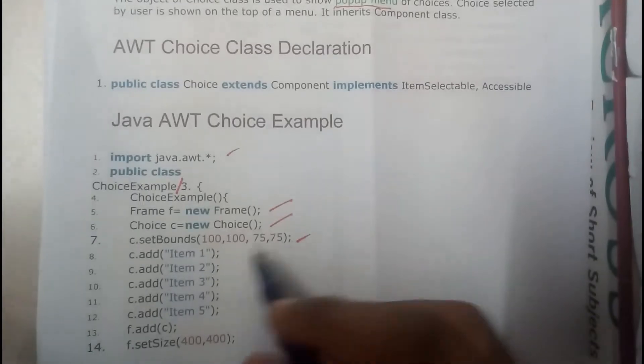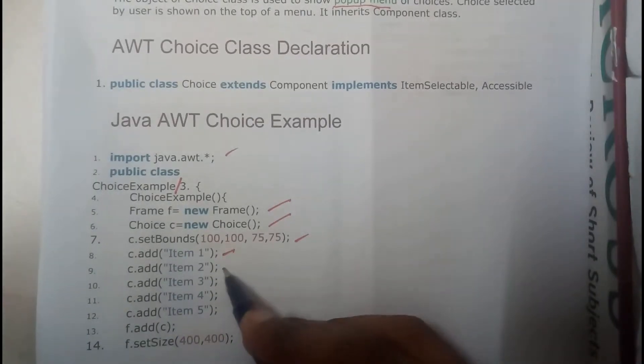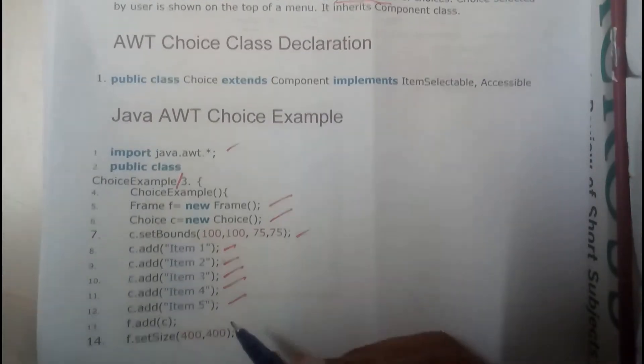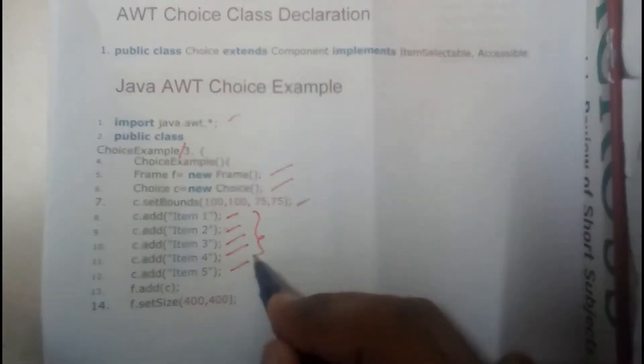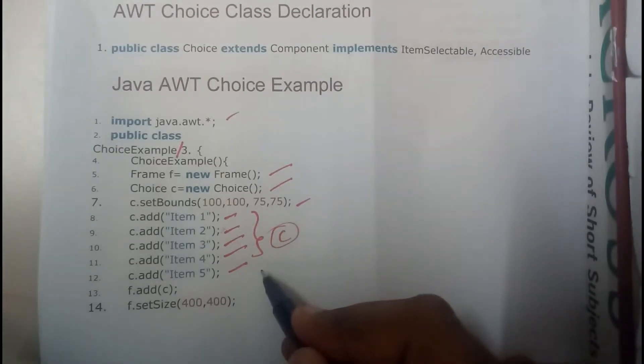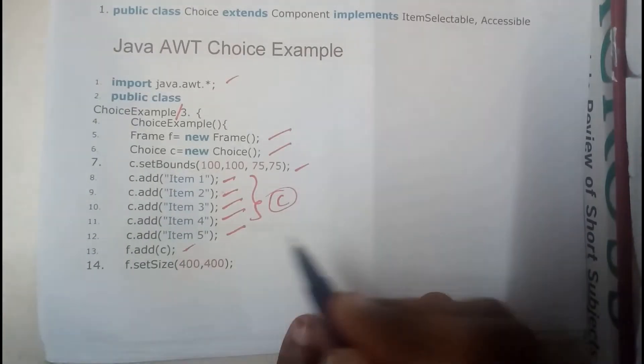We set the choice size to 100, 100, 75, 75 and we add the first item, second item, third item, fourth item, and fifth item. Then we add all these items represented by the object C into our frame.